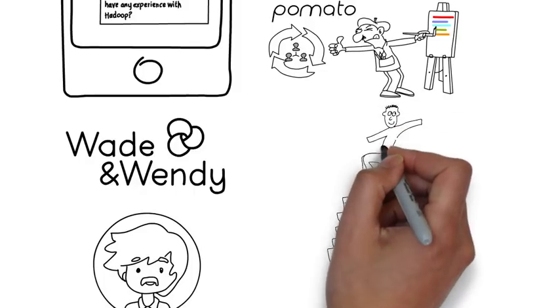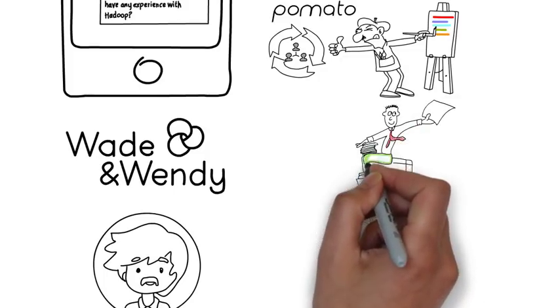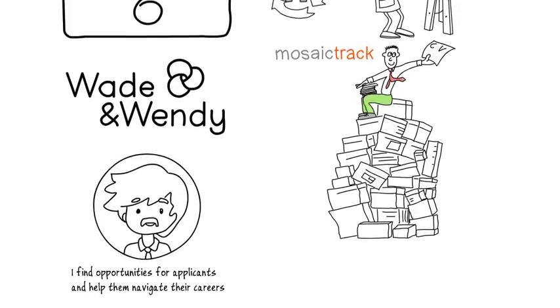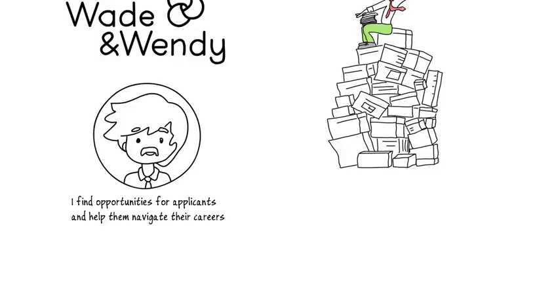Mosaic Track also uses AI to match current and past applicants to your new job openings for a skill and culture match by simulating how a hiring team reads a CV. It also has an AI career agent that reviews candidates' interests and engages with them to find a suitable position within your organization.